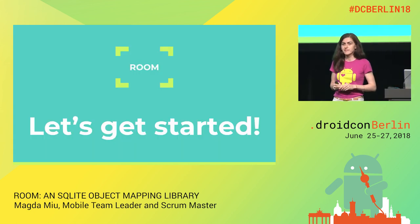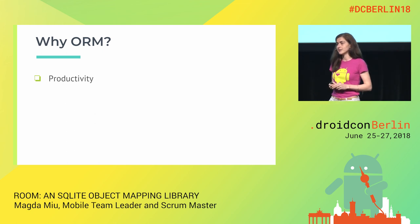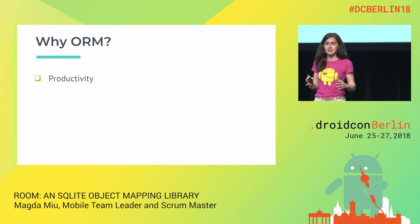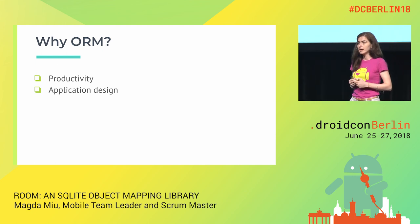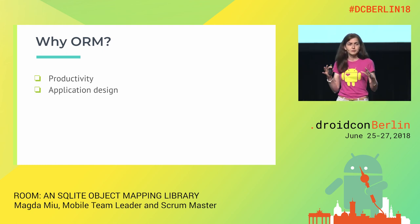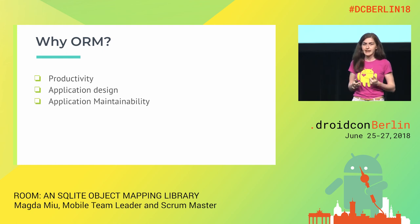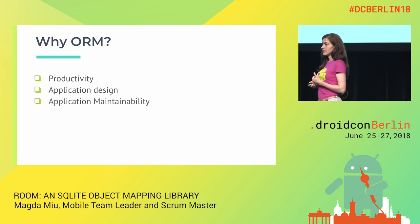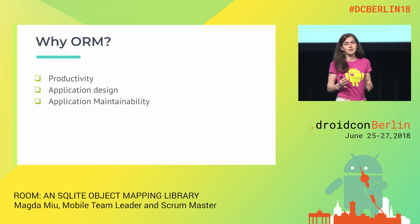My presentation will focus on Room, which is an object-relational mapping library. Why an ORM? First, because of productivity — when you use an ORM, you write less code. You define the models and the tool generates the code for you. Another advantage is application design: concerns are well separated and you can follow design patterns. Additionally, application maintainability improves because you care less about the generated code and focus on adding new elements to your database schema.